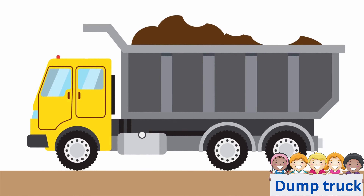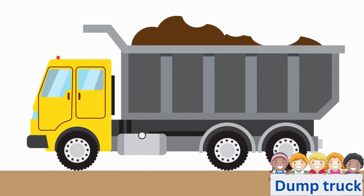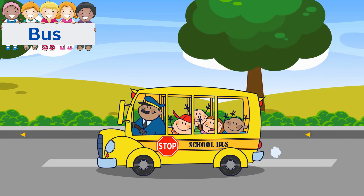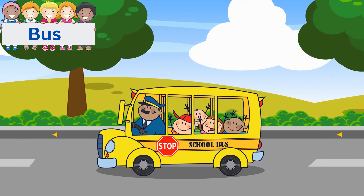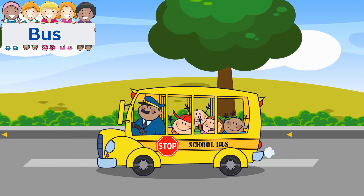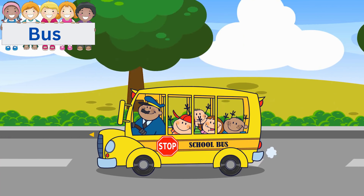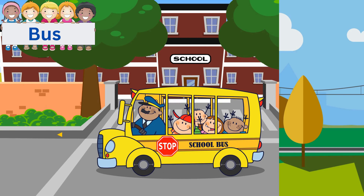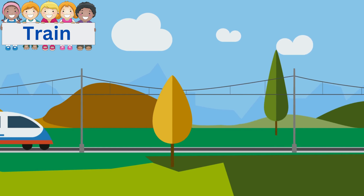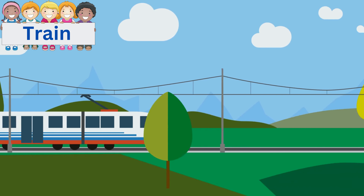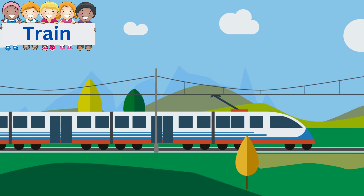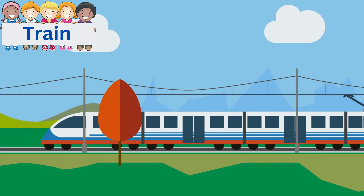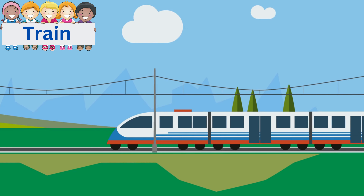Dump Truck. A dump truck is a truck for carrying and dumping loose material. A Bus. A bus is a large-wheeled vehicle meant to carry many different persons along with the driver. A Train. A train is a series of connected vehicles that run along a railway track and transport people or freight.